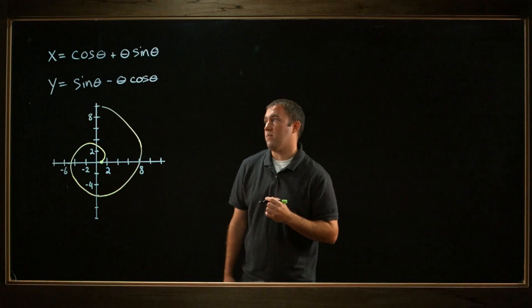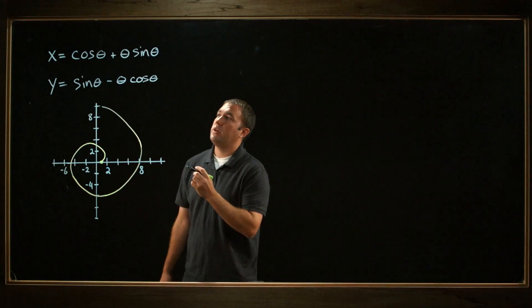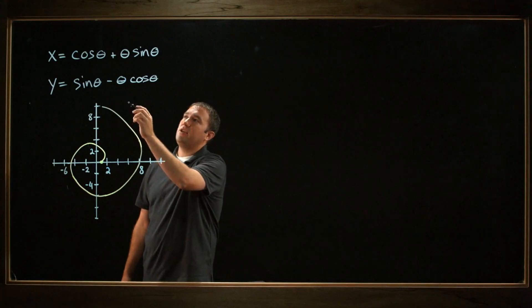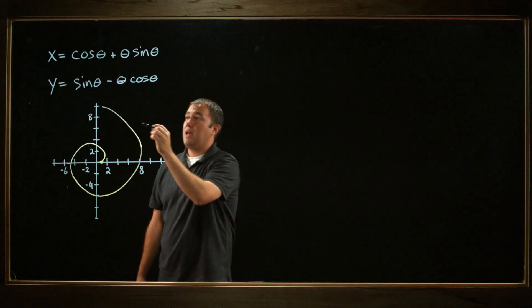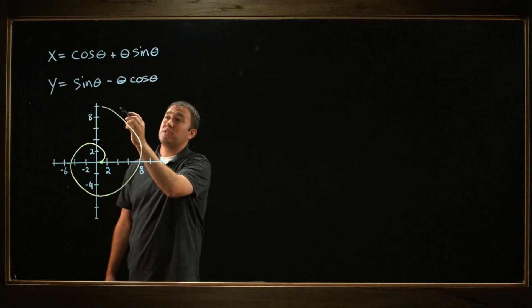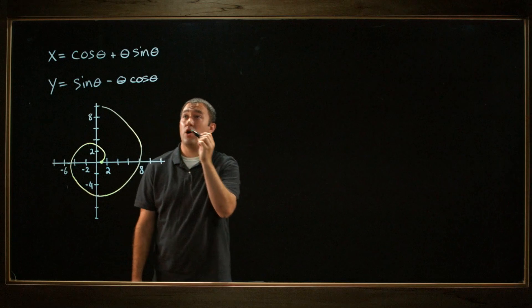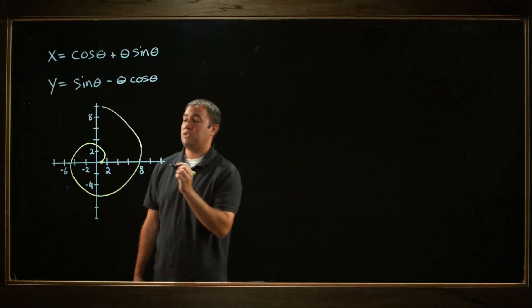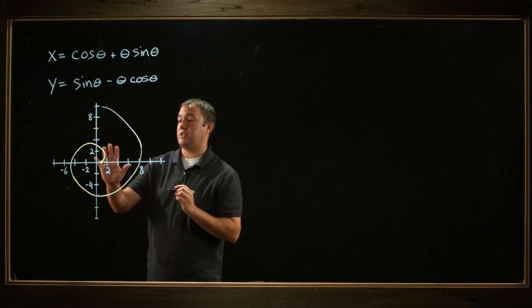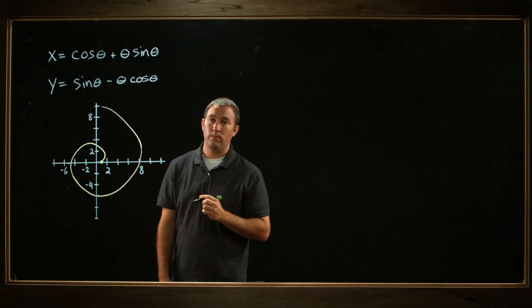Hi, I'm David. Let's look at this problem. We're given the set of parametric equations: x equals cosine theta plus theta sine theta, and y equals sine theta minus theta cosine theta. We're given a sketch of what this thing looks like, and I've reproduced that sketch as best I can here on the board.